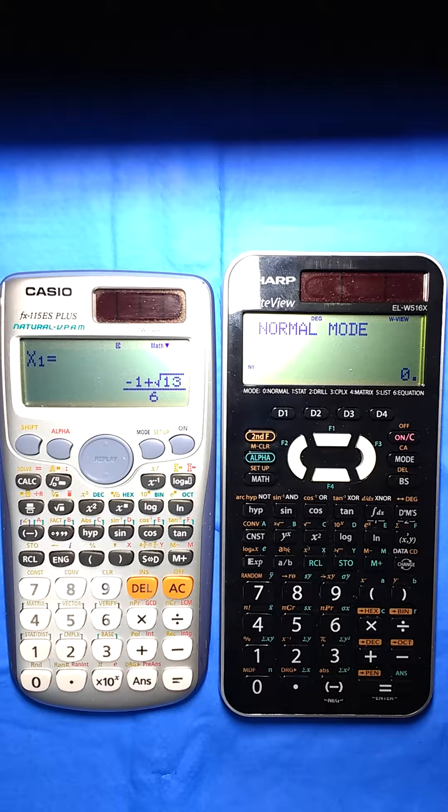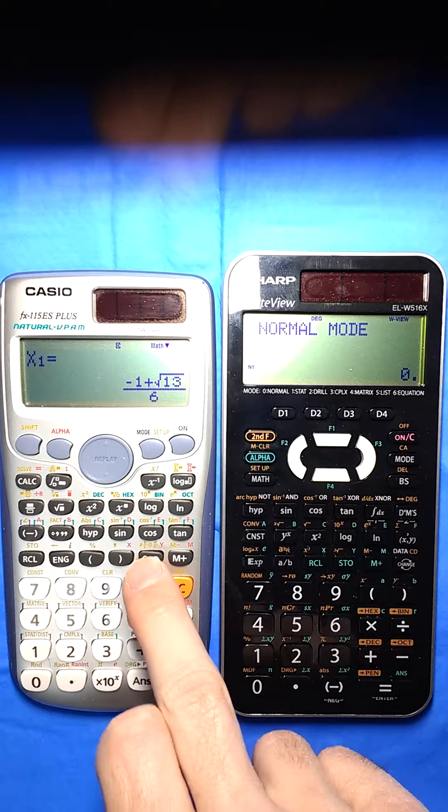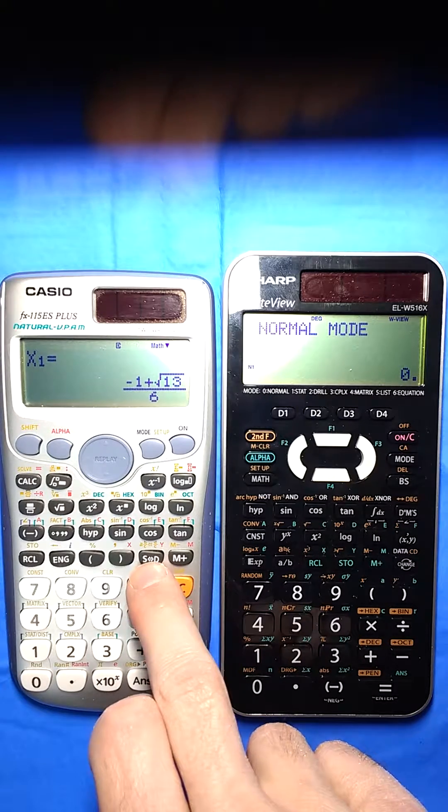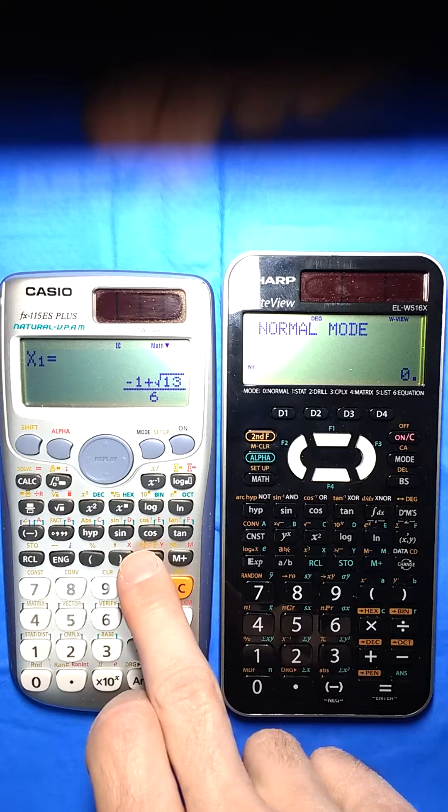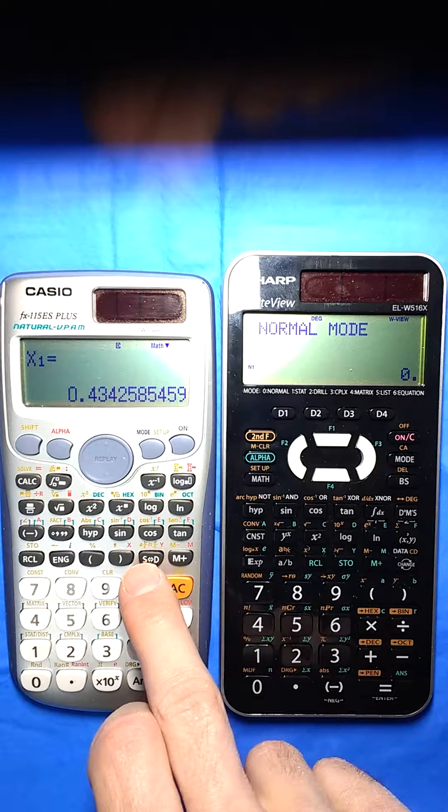And what's cool is, as you can see, it's an exact answer. It leaves the radical. It simplifies everything and reduces fractions if it can. And then if I want the decimal value, I can just hit this button here. It converts it. And there you go. There's your decimal.